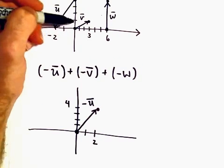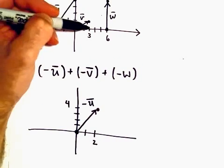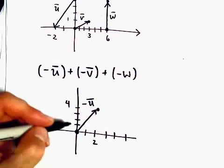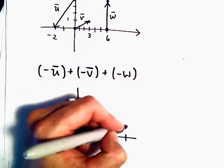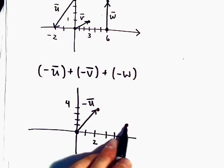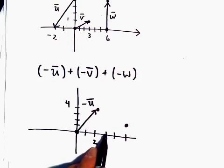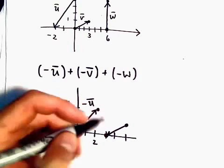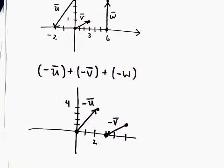All right, negative v. Well v originally we went three units to the right and one unit up, so now to sketch negative v, instead of going three units to the right I would go three units to the left, and instead of going one unit up I would go one unit down. So there would be a little example of the vector negative v.